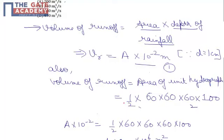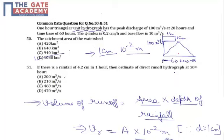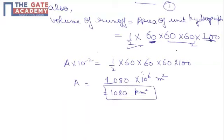Area of unit hydrograph will be half into base. Base is given in hours so let's convert it into seconds, 60 into altitude or peak. Peak as shown in this figure will be 100, half into base into height taking care of proper units. And this volume of runoff should be equal to what we obtained in equation 1.